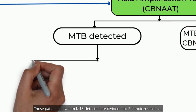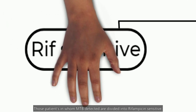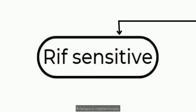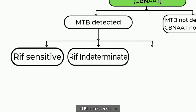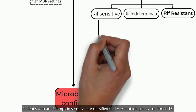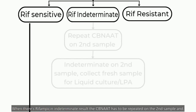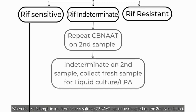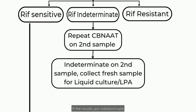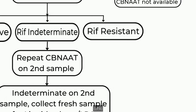Those patients in whom MTB is detected are divided into rifampicin-sensitive, rifampicin-indeterminate, and rifampicin-resistant. Patients who are rifampicin-sensitive are classified under microbiologically confirmed TB. When there is a rifampicin-indeterminate result, the CBNAAT has to be repeated on a second sample, and if the results are still indeterminate, then collect a fresh sample for liquid culture or line probe assay, LPA.